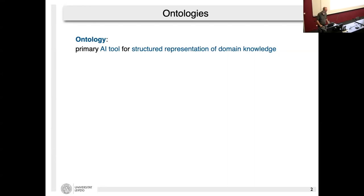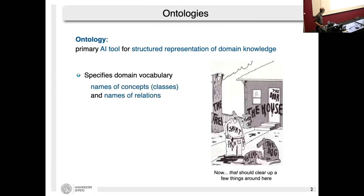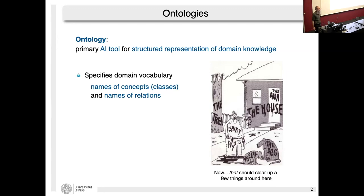Let me start with a few general words about what ontologies are. They are the main tool in artificial intelligence for structured representation of domain knowledge using a logical language. An ontology specifies a vocabulary for some application domain — in particular it fixes the names of what we call concept names, also called classes or unary predicates.